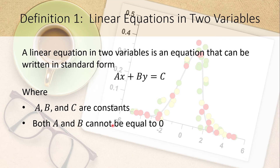A linear equation in two variables is an equation that can be written in standard form: a times x plus b times y equals c, where a, b, and c are constants and x and y are variables. The only constraint is that both a and b cannot be equal to zero, because if they are, then c has to be equal to zero, and we'd have zero equals zero, which is not particularly useful for math in business and economics.